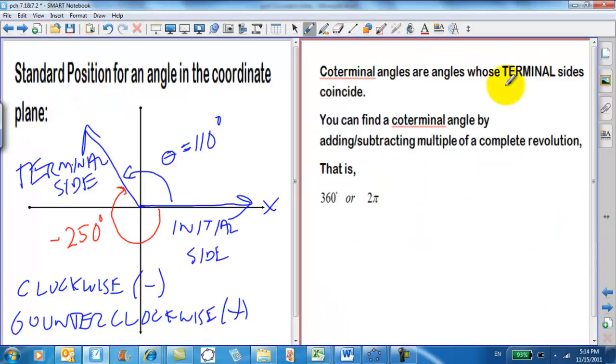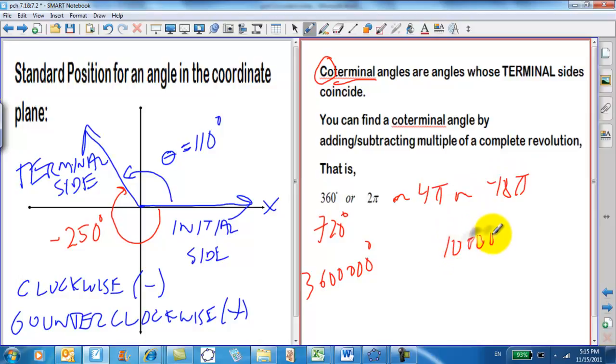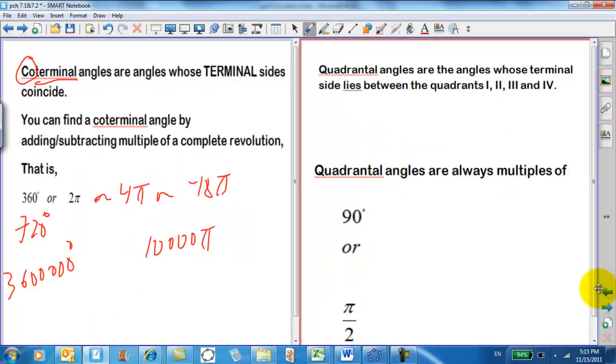Coterminal angles are angles whose terminal sides coincide. Even these are different amounts of rotation and different directions of rotation, because their terminal sides end up in the same spot, they're called coterminal. You can find coterminal angles by adding or subtracting multiples of a complete revolution. That is 360 degrees, or 720, any multiple of 360. You could have 2 pi, or 4 pi, or negative 18 pi, or 10,000 pi would be a multiple of 2 pi. If you add them onto an angle, that would give you a coterminal angle. Different amounts of rotation, different direction of rotation, but you end up in the same spot. For our work with trig functions, we're going to find that coterminal angles give the same trig result.